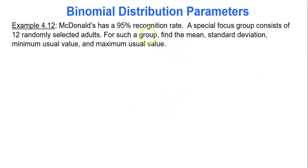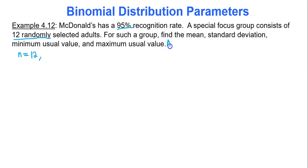McDonald's has a 95% recognition rate. A special focus group consists of 12 randomly selected adults. For such a group, find the mean, standard deviation, minimum usual value, and maximum usual value. I need to identify n, p, and q. My number of trials — the number of people — is 12. A success is recognizing McDonald's. So the probability of a success, the probability of recognizing McDonald's, is 0.95.